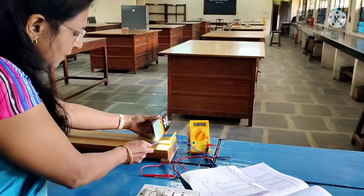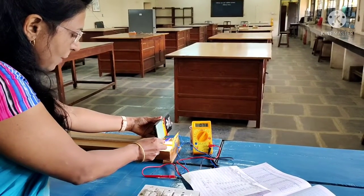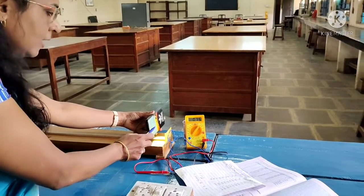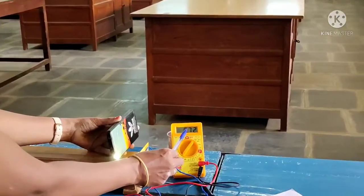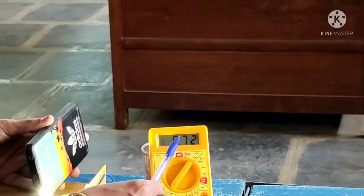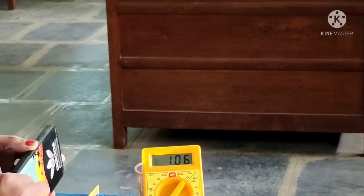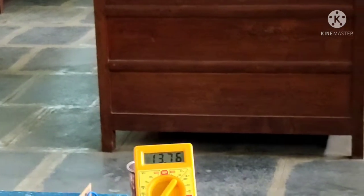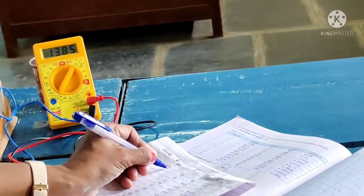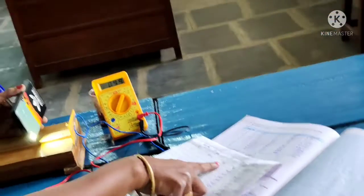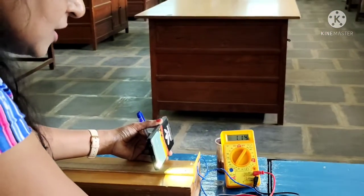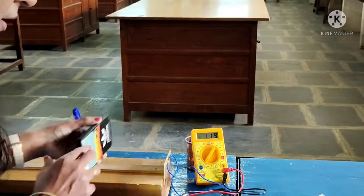First reading here, take the light source for 5 centimeter distance and intensity of light here focused on this LDR filament. Then note down the reading, that is resistance. First reading is 0.72. This one is reading for 5 centimeter, 0.72.